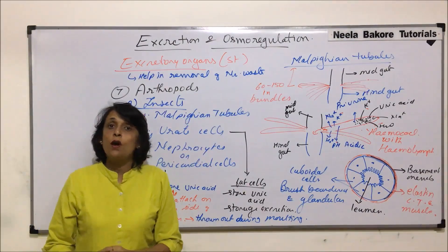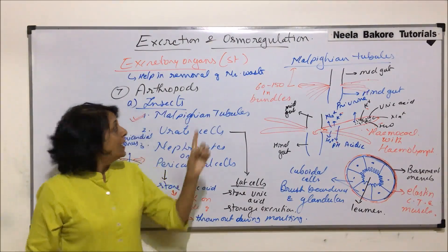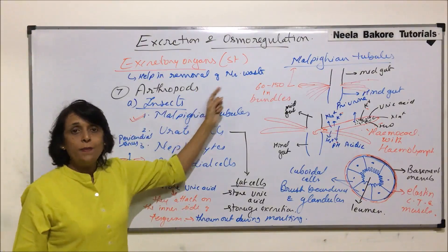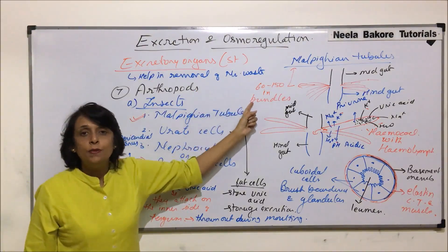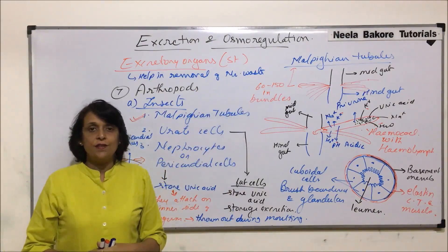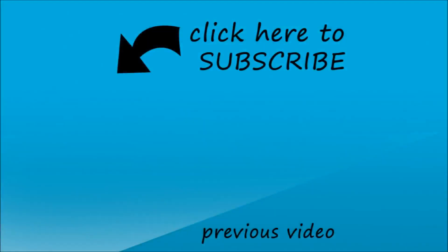So among insects these are the important excretory structures. In the next category we will talk about the same phylum Arthropoda but the next group — crustaceans.